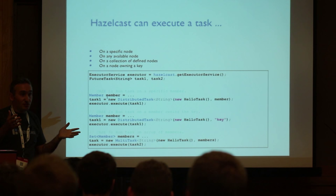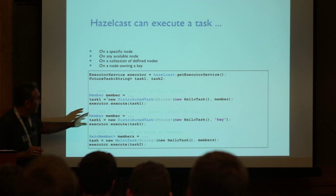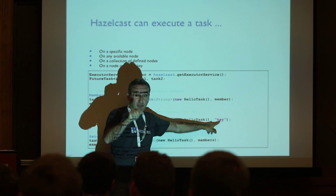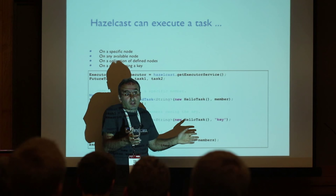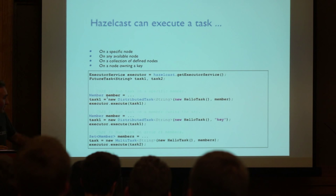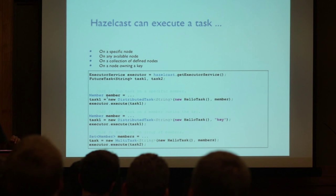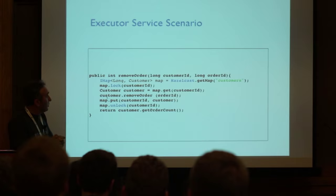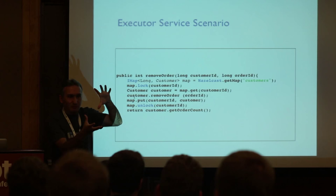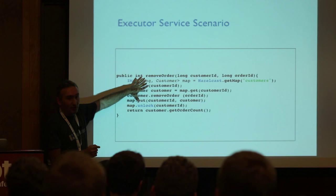Executor service: it's a regular Java ExecutorService, but tasks run on the cluster nodes. You can say: run this task on this specific member, or run this task for a particular key — meaning go to the owner of that key, because your data is there. Or you can say run on each member and give me a collection of results. For example, to update and remove an order from a customer object, you'd get the customers map, lock the entry, remove the order, put the updated object back, and unlock.